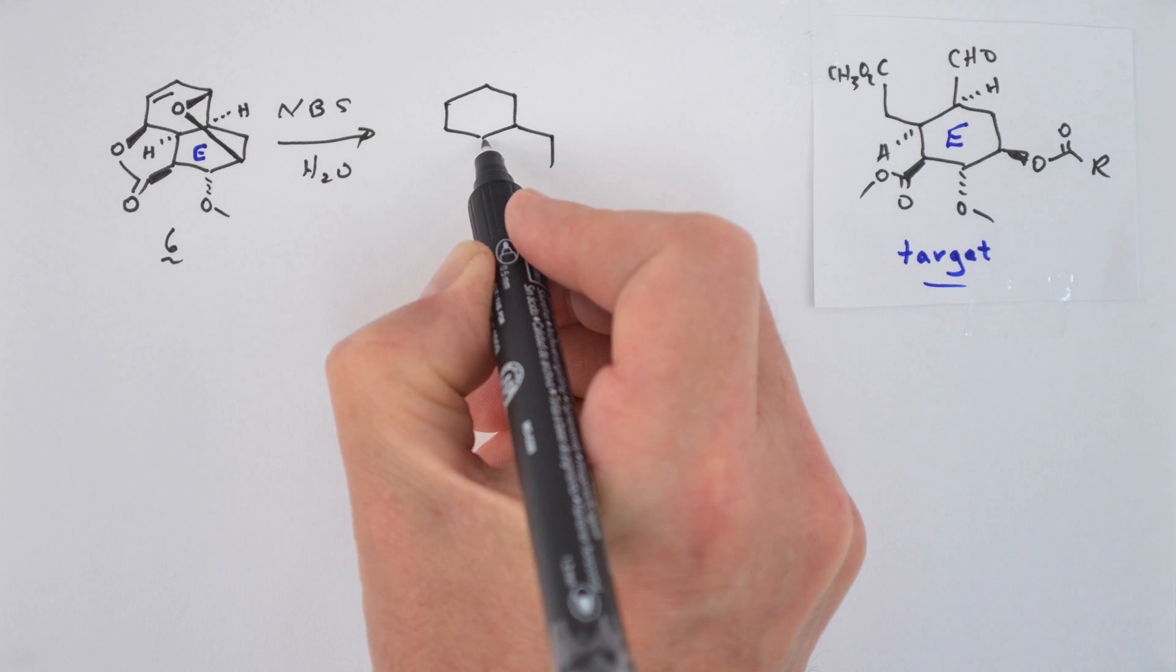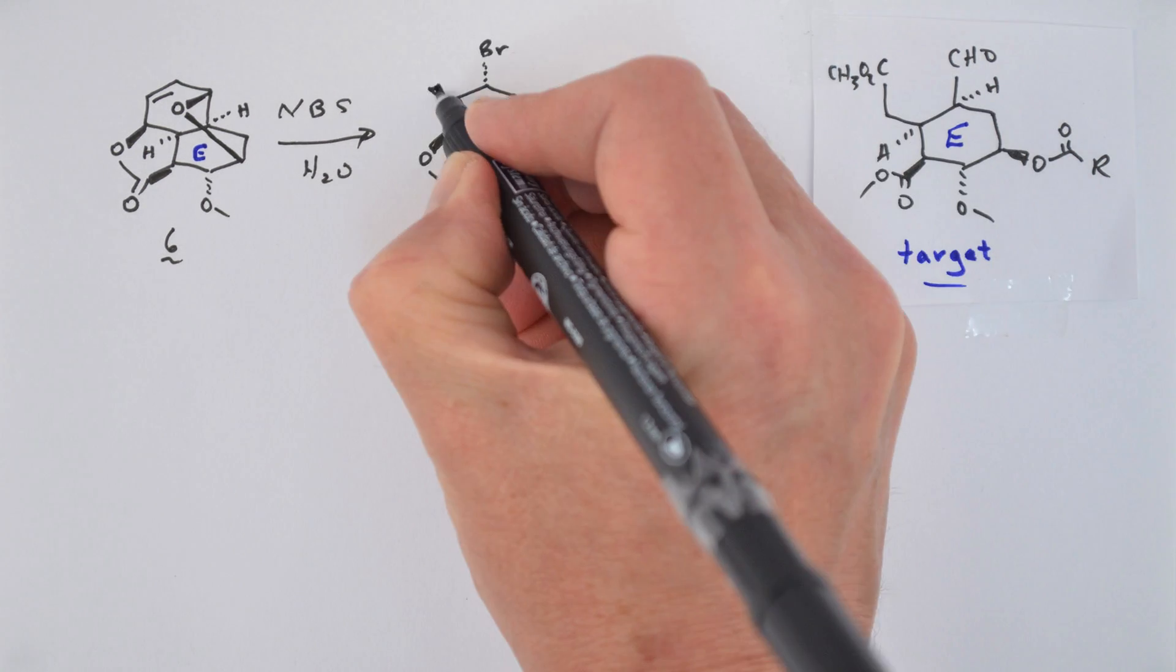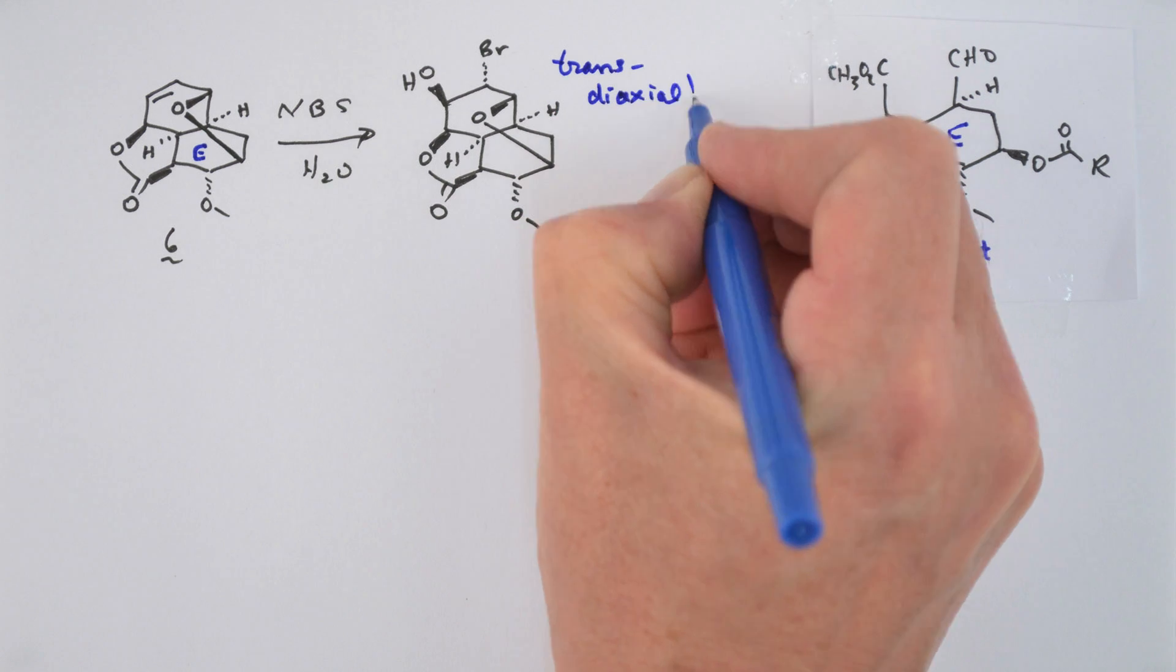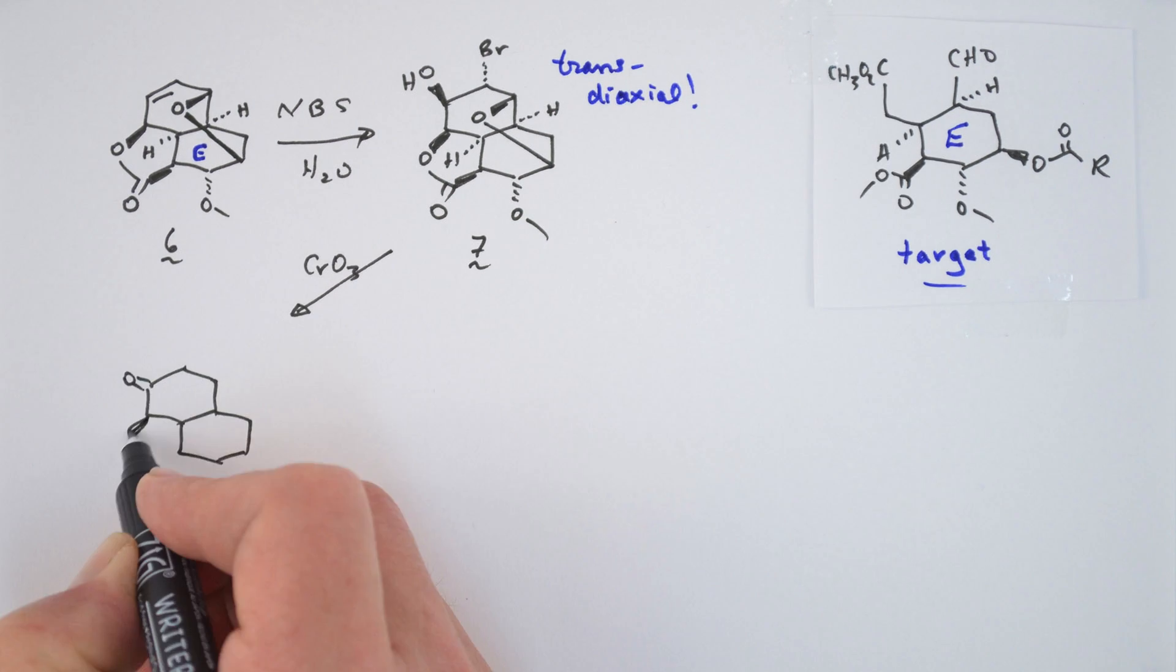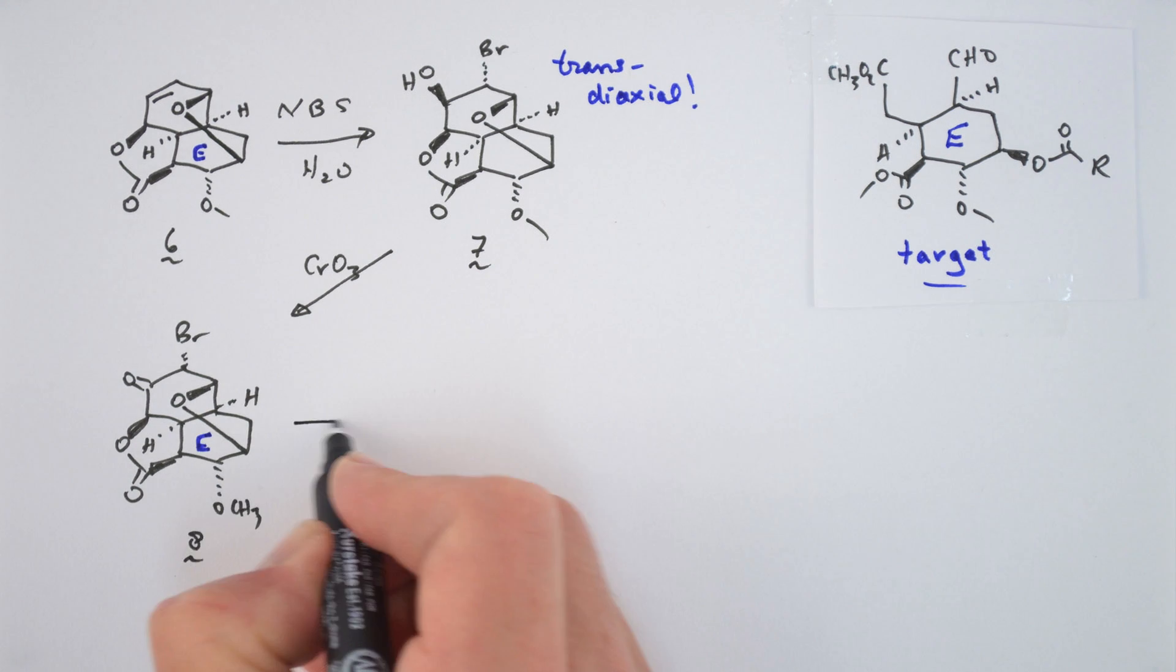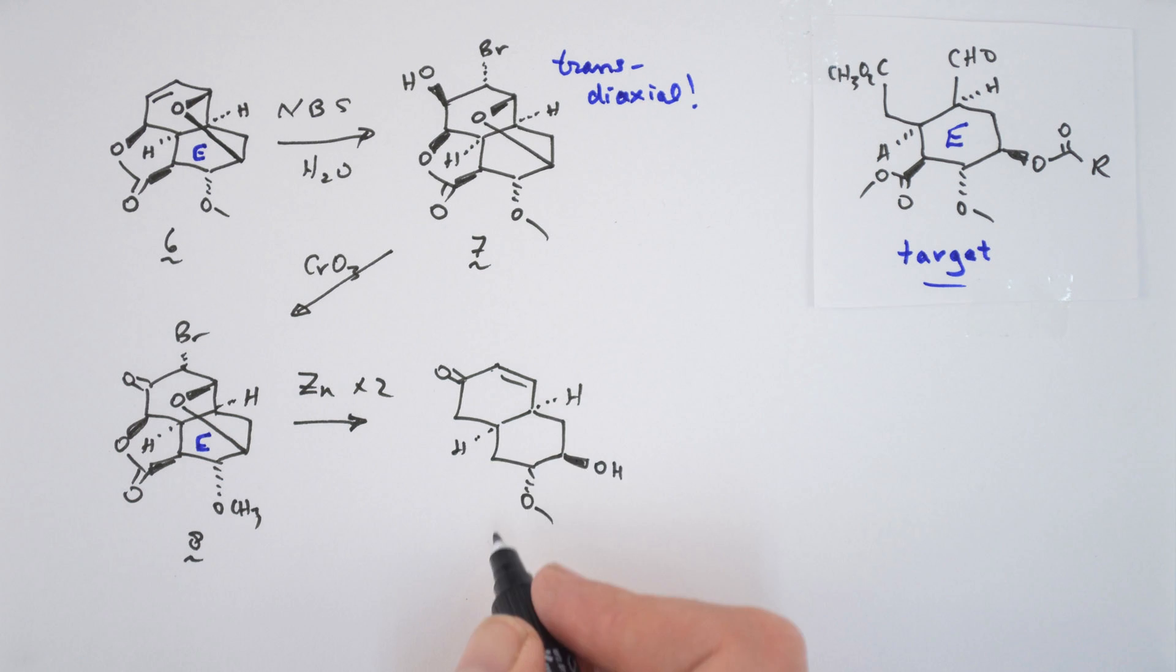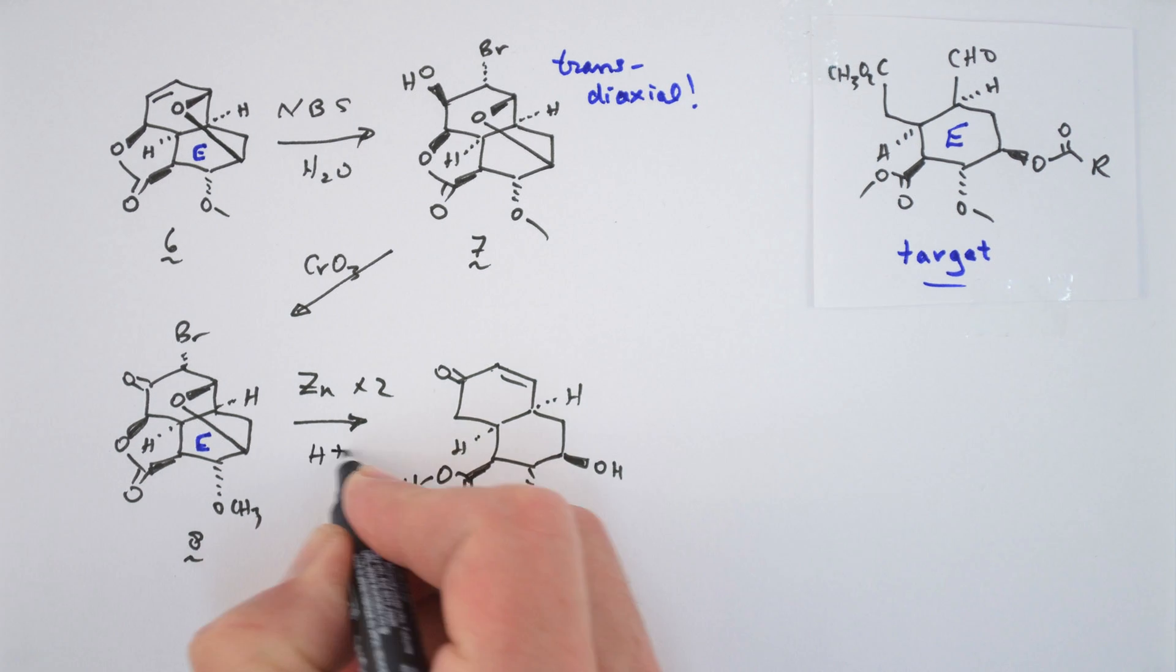Addition of aqueous bromine to the double bond in 6 gave bromohydrin 7 stereoselectively, whose hydroxyl group was oxidized to the ketone 8 with chromium trioxide. This molecule basically looks like a ball, and it was unwound to give 9 using two equivalents of zinc. The double reduction mechanism looks something like this.